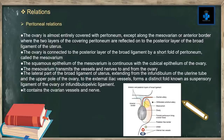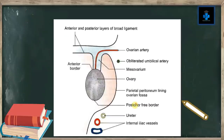Here you can appreciate an ovarian artery through the mesovarium. This is the mesovarium, this is the ovary, this is the anterior border, and this is the posterior free border. This is an enlarged view and everything can be appreciated clearly.